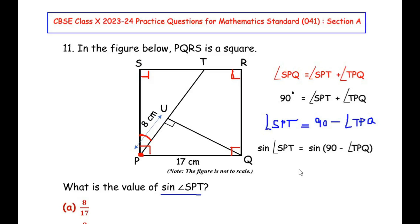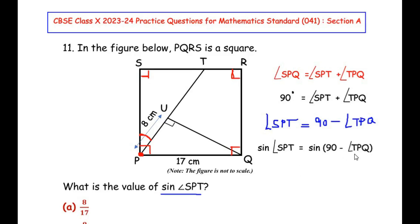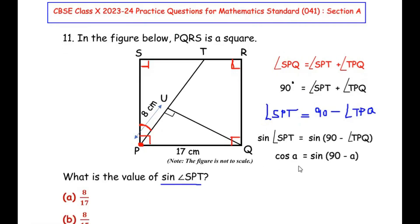Sine of 90 minus any angle given is nothing but cosine of that angle. Let me write over here the complementary angles: sine of 90 minus a, where a is any angle, is nothing but equal to cos a. This is the complementary angles of trigonometric ratios.